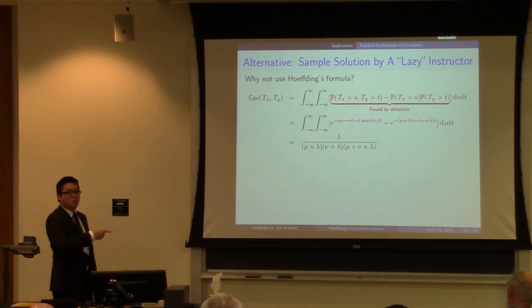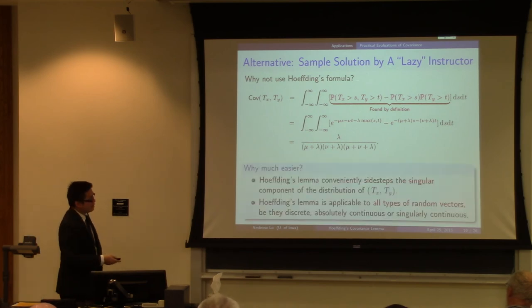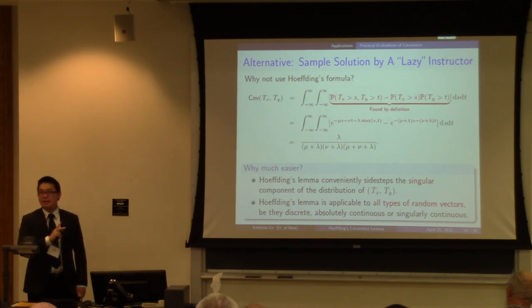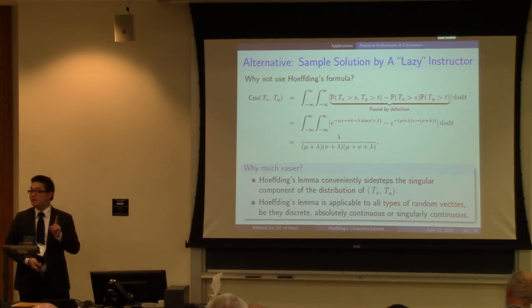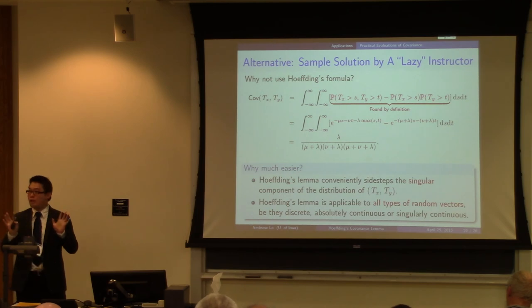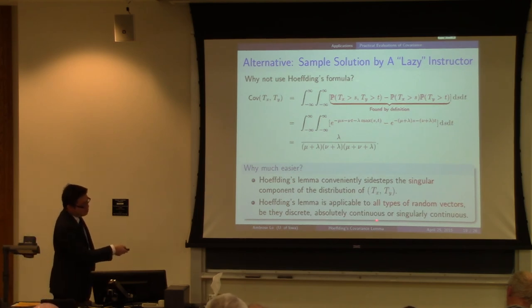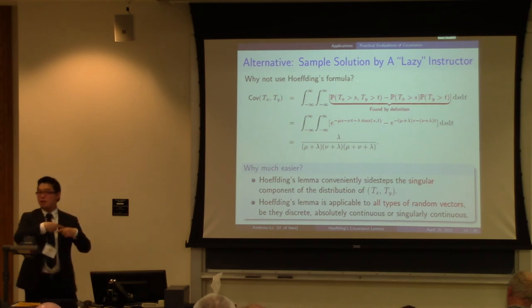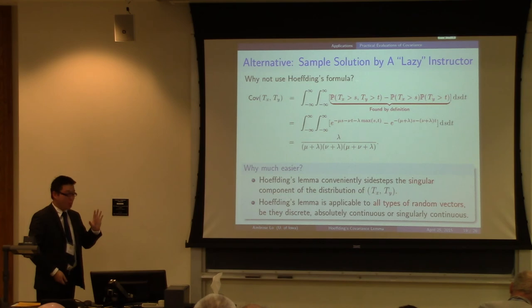The reason Hoeffding's formula is so simple here is that it conveniently sidesteps the intricacies arising from the singular component of the joint distribution. In fact, this formula is applicable to all kinds of random vectors — discrete, absolutely continuous, singularly continuous, or any mixture of these types of distributions. It always works.